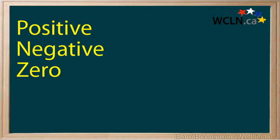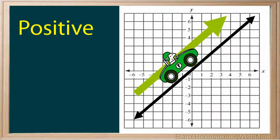Rate of change can be positive, negative, or zero. A positive rate of change shows a rise from left to right on the graph. The x and y values are increasing.